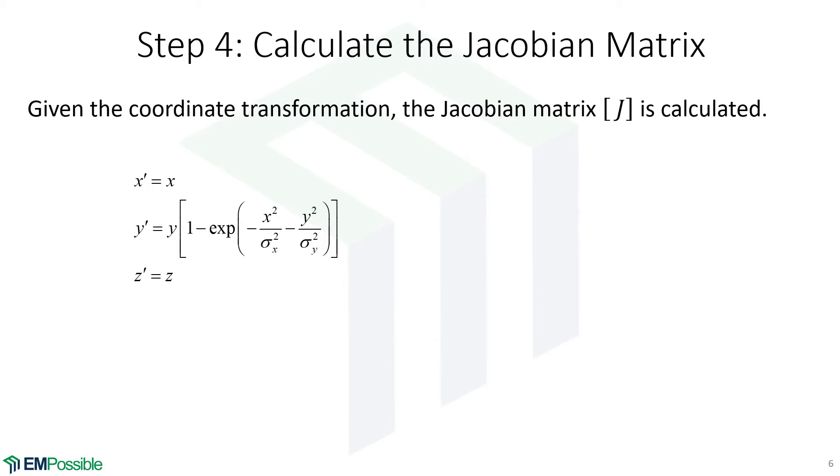Given that we have our coordinate transformation, we calculate our Jacobian. So starting with the equations of our coordinate transform, we know how our Jacobian is defined and we're in Cartesian coordinates here. So we go one tensor element at a time. And we're starting with these equations. We're taking all of the partial derivatives that we need to populate this tensor.